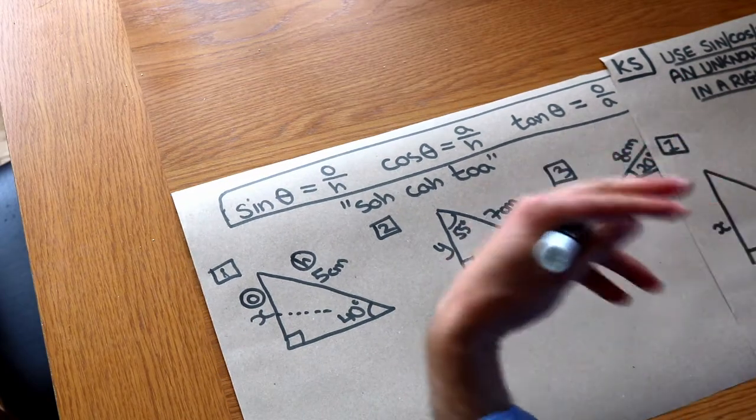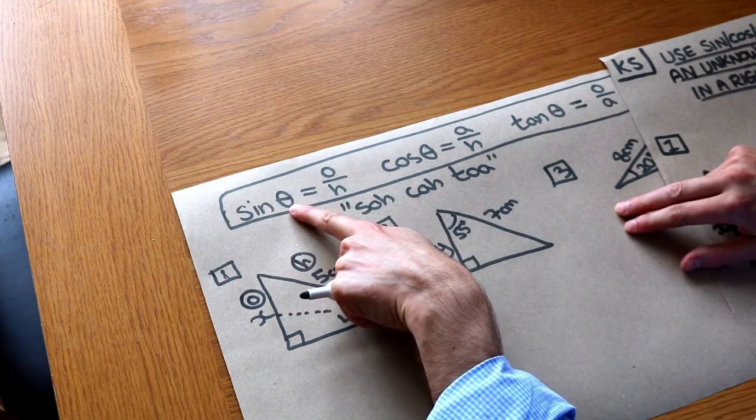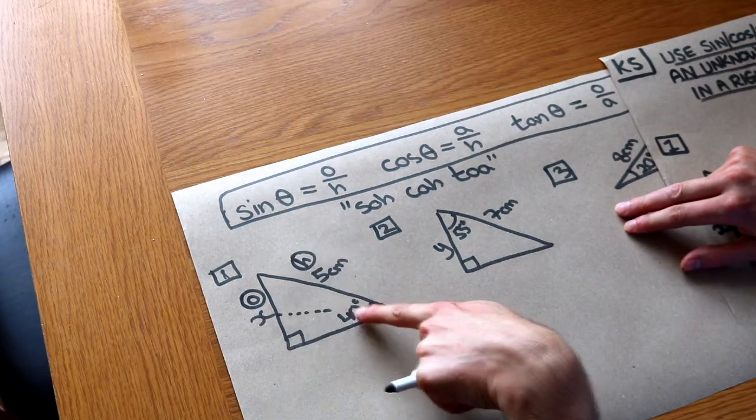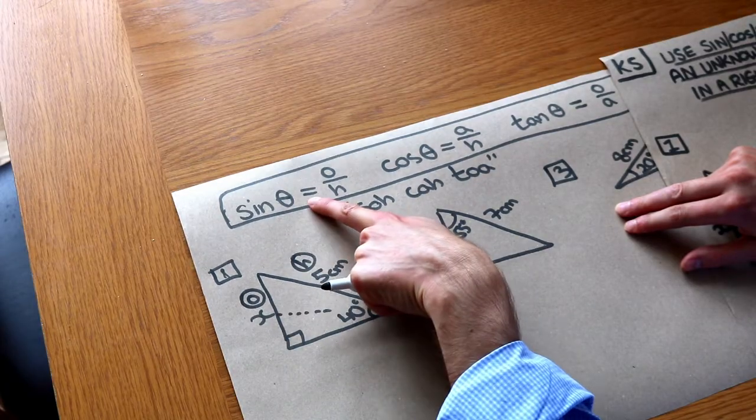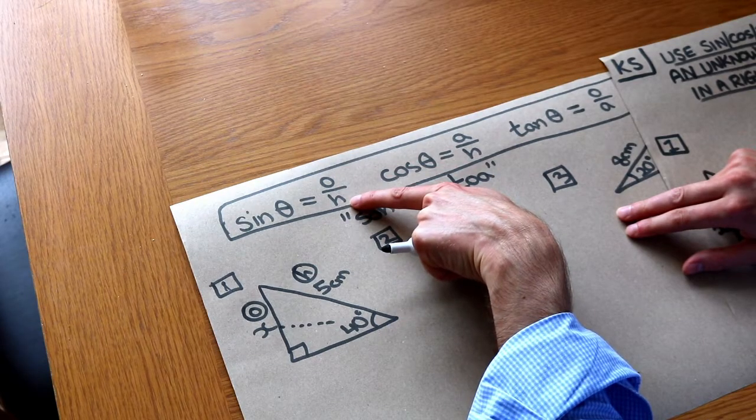You don't have to worry about how they work on your calculator. But when you do sine of an angle, that's the letter theta in the Greek alphabet, when we do sine of an angle in this case, this angle, that gives us how many times bigger the opposite is than the hypotenuse.